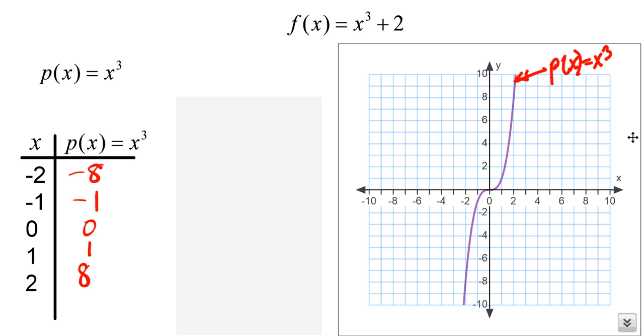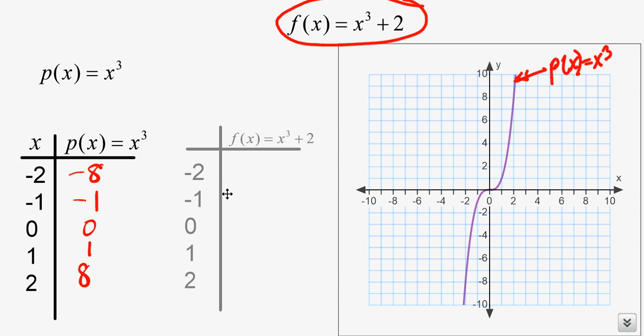Hopefully your graph looks like the cubic function graph that I've drawn right here. Now, what I'd like you to think about is the table for the new function that we're trying to come up with, which is f of x equals x cubed plus 2. So in other words, you've got to use the information about x cubed to come up with x cubed plus 2 function.